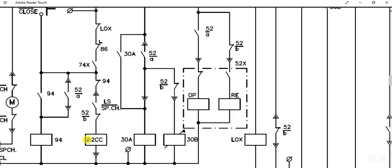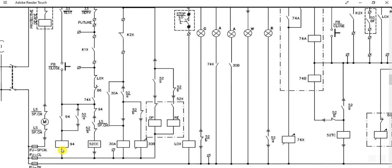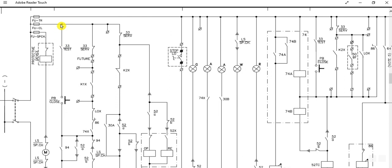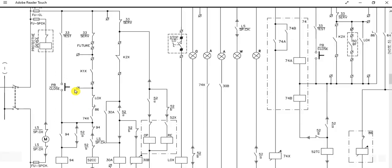Here is the 52CC — the circuit breaker closing coil. The 90 is the anti-pumping feature. When the breaker is in test position, the path will go through here. If you press the push button, it will follow this path and energize the 52CC closing coil, and the circuit breaker will be closed.